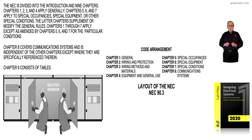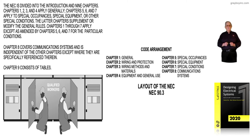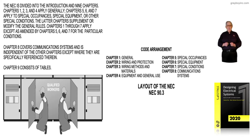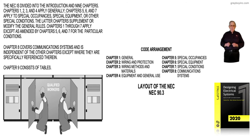Chapter 4 is general purpose equipment, and it covers all equipment installed in a facility, except chapter 5 equipment such as hazardous locations and healthcare facilities. Chapter 6 is special equipment, and basically you can't find any of the chapter 6 special equipment in chapters 5 and 4, but it can intermix and be installed within chapter 4 and chapter 5 equipment.